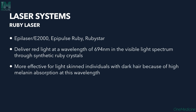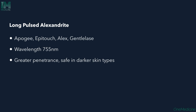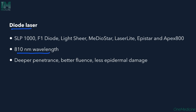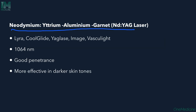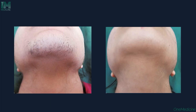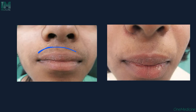Certain laser systems in use: ruby laser (epilaser E2000, epipulse ruby star) delivers red light at 694 nm and is more effective in light-skinned individuals with dark hair. Long-pulsed alexandrite laser at 755 nm has greater penetrance and is safer in darker skin types. Diode laser at 810 nm has deeper penetrance, better fluence, and less epidermal damage. Nd:YAG (neodymium yttrium aluminium garnet) laser at 1064 nm has good penetrance and is more effective in darker skin tones due to deeper penetration and less epidermal damage.